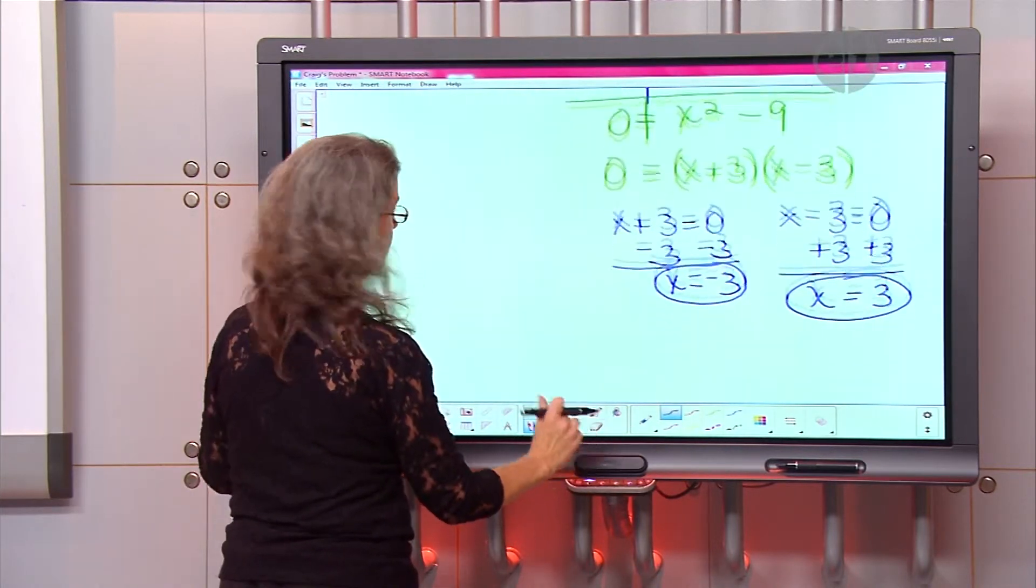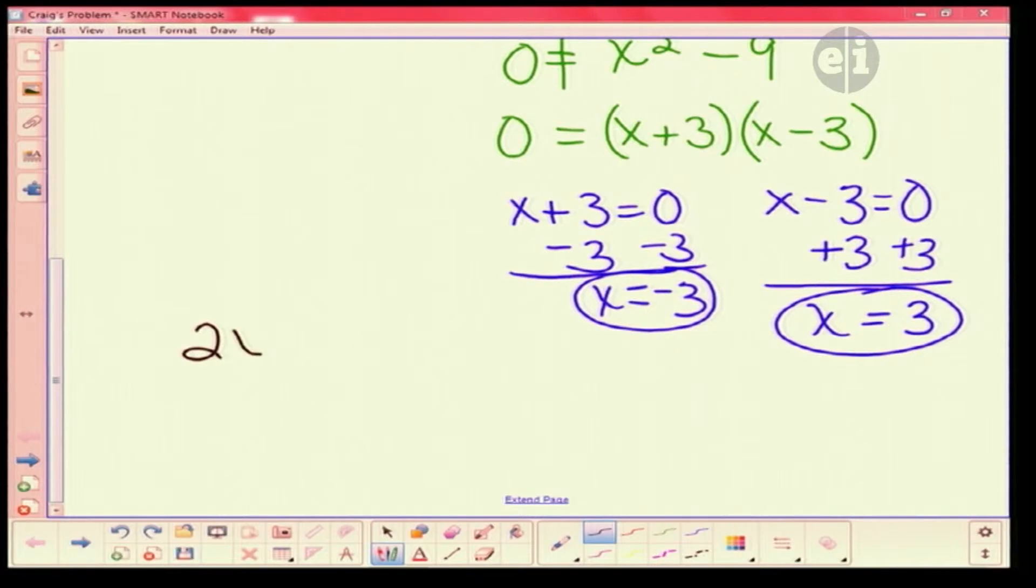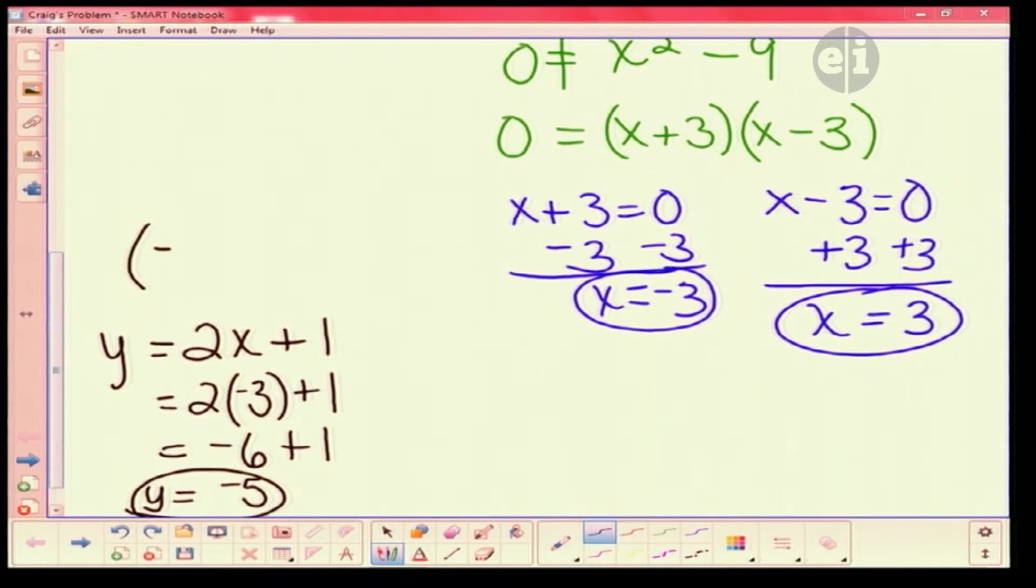So we're going to come over here. I have 2x plus 1 is equal to y. And we're going to do this twice. 2 times negative 3 plus 1. Well, 2 times negative 3 is negative 6. I'm going to add 1 to that. That means I'm at a negative 5. So my one point would be negative 3, negative 5.